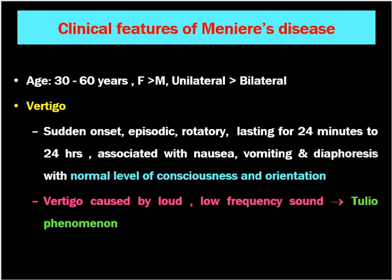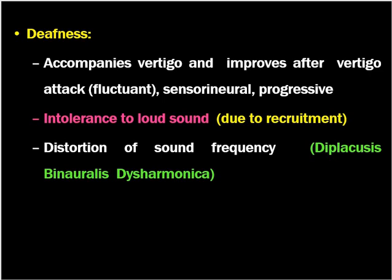The vertigo occurs with normal level of consciousness and orientation — this is very important. If a patient presents with sudden onset vertigo with loss or decreased consciousness, a central cause (heart or brain) must be considered. Vertigo is sometimes triggered by loud, low-frequency sound, called the Tullio phenomenon, due to expansion of the vestibule. Deafness in Meniere's disease accompanies vertigo and improves after the attack — fluctuating deafness — and it is sensorineural and progressive; every attack results in progressively greater hearing loss.